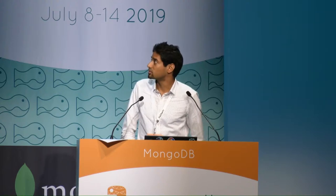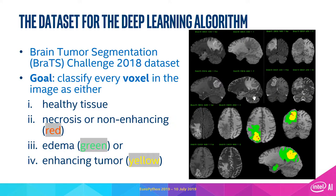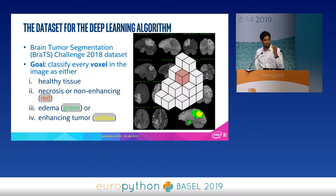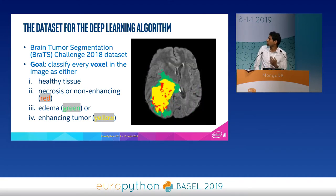Let's look at the dataset we used to train our deep neural network. The dataset comes from the Brain Tumor Segmentation, or BraTS, challenge of 2018 — an open-source dataset provided by the University of Pennsylvania. The goal for our deep learning algorithm is to look at 3D volumes and figure out whether a 3D pixel, or voxel, contains cancer or not — essentially cancer or no cancer — and color-label different types of cancer to different channels.